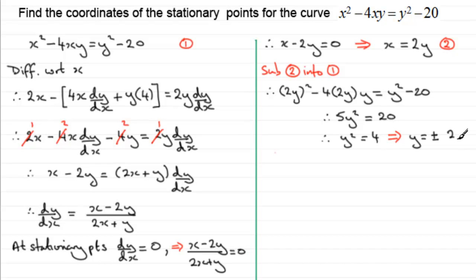Now all I need to do is just substitute y equals plus or minus 2 into equation 2 to get what x is. I'm just going to say it here, and that is sub y equals plus or minus 2 into equation 2. So that means that when y equals 2, we can see that x will equal 2 times 2, 4. And when y equals minus 2, clearly x equals 2 times minus 2, which is minus 4.